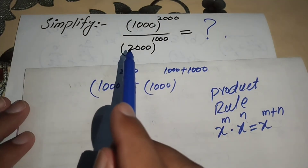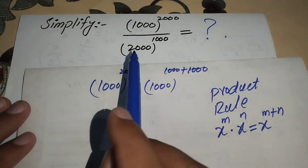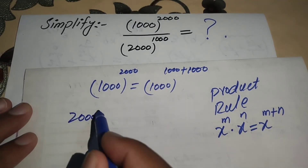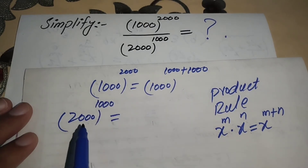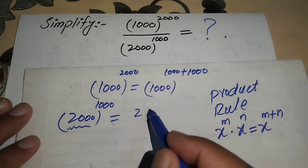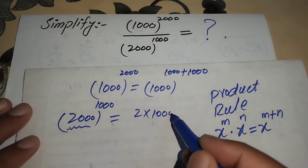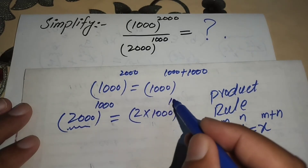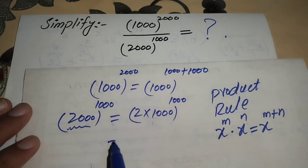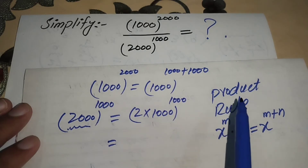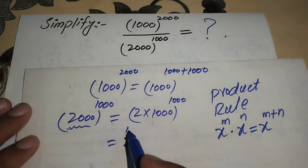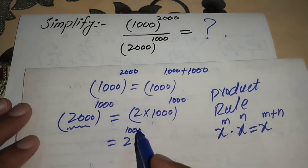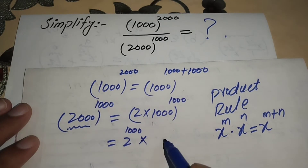Now focusing on the denominator: 2000 to the power 1000. We rewrite 2000 as 2 × 1000, so the denominator becomes (2 × 1000) to the power 1000. Applying the product rule of exponents again, we get 2^1000 × 1000^1000.